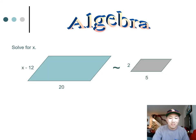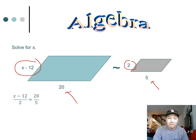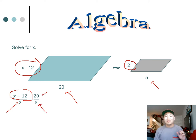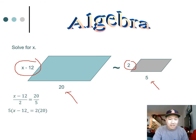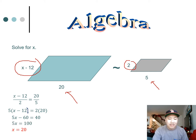Next there's a little bit of algebra. Compare the sides: X minus 12 compares to 2, and 20 compares to 5. Set up your proportion — X minus 12 over 2 equals 20 over 5. Stay consistent, going big to small or small to big throughout. Cross multiply, distribute, and solve — X equals 20.